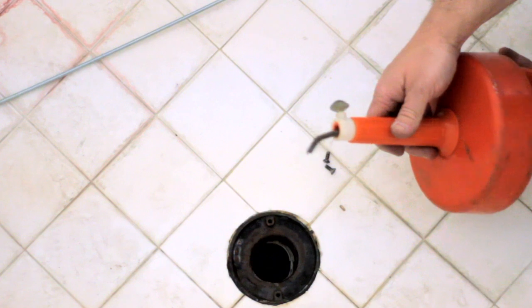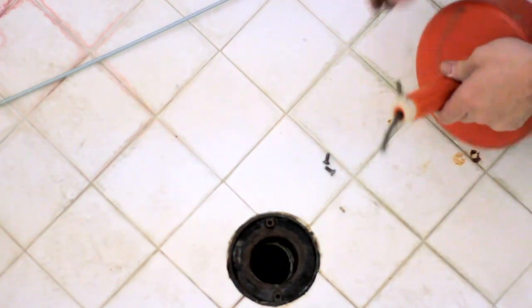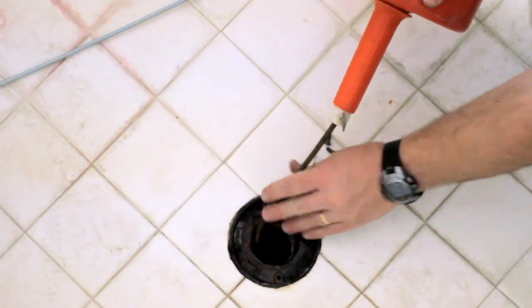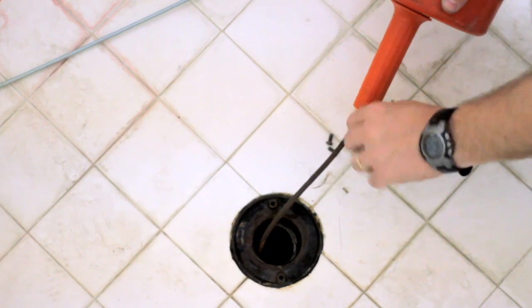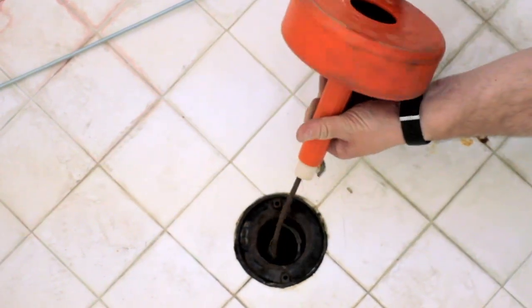Now, if the plug is beyond that, you'll need a hand snake, something like this, a little quarter inch snake. And these here simply feed down the drain so far, and then you lock them in place, twist, and force that down.